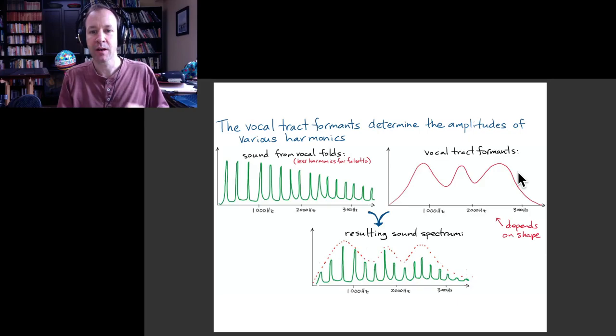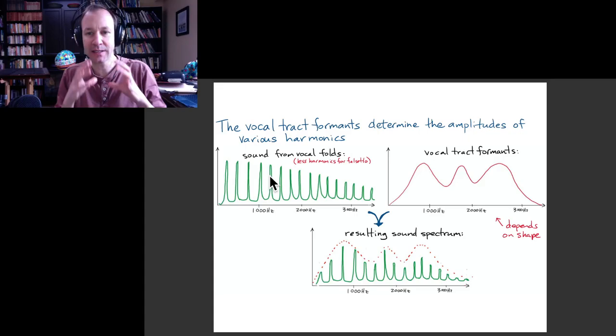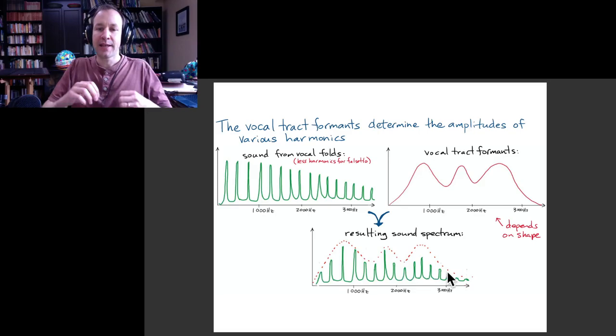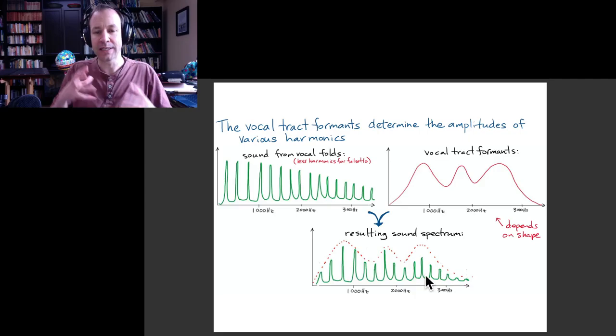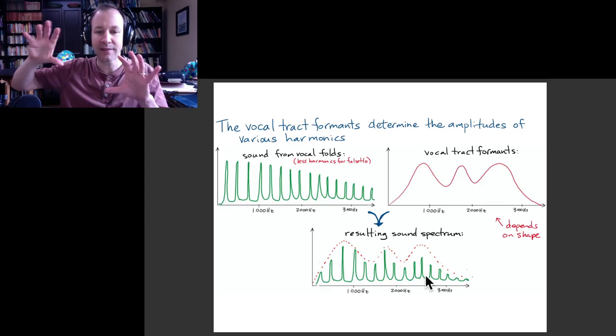So what happens is that the sound from your vocal folds goes up into the vocal tract. And you go from this picture to a picture like this. And you see that the regions of frequency that vibrate readily inside the vocal tract, those are going to be enhanced relative to the other frequencies. So this original sound from your vocal folds is processed into a different sound, which is going to be the same pitch, but a different timbre, a different kind of sound.